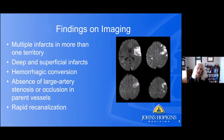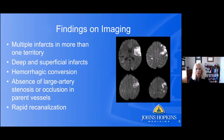On imaging, embolic stroke classically presents as multiple infarcts in more than one territory. This example brain MRI — a DWI sequence where bright signal means acute ischemia — shows infarcts on both the right and left side of the brain, in both anterior and posterior circulation, and further down in the cerebellum and brainstem. It can be both deep and superficial. Hemorrhagic conversion is also quite common with embolic strokes. Absence of large artery stenosis in the parent vessel is expected, and rapid recanalization is a known feature.